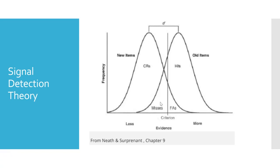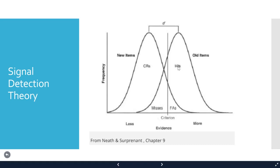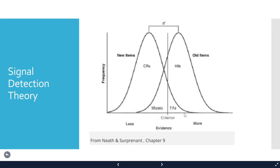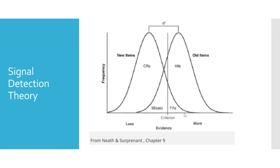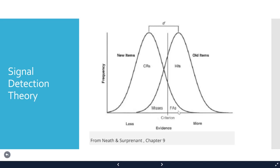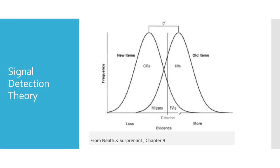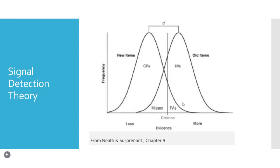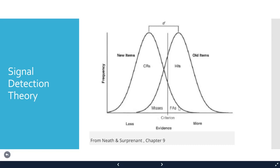With liberal instructions, participants give more old responses and have a more liberal criterion. If you give more points for hits, people call more things old, shifting the criterion left and making the c value more negative. Conversely, a conservative criterion — where people say old only if they're certain — moves the criterion to the right. Giving more points for correct rejections would also shift the criterion right, making c more positive.